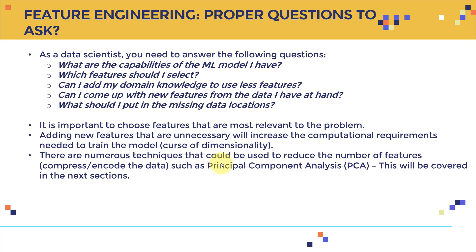There are numerous techniques that could be used to reduce the number of features, such as compression and encoding the data. We're going to cover a feature reduction technique called Principal Component Analysis, or PCA for short, in a future lecture. Basically, if you have 10 features, PCA can compress them into, say, five features.